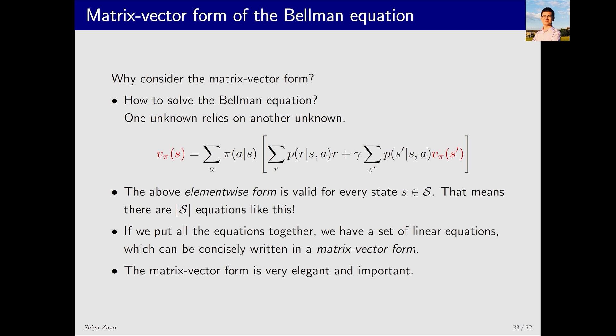Once we have a Bellman equation, we need to solve it. As you can see, this is the expression of the Bellman equation we have derived. The left-hand side contains one state value and the right side contains another state value. From this single equation, it is impossible to calculate the state value directly.